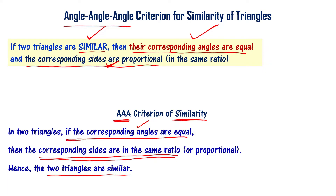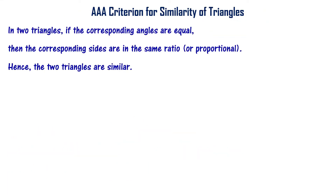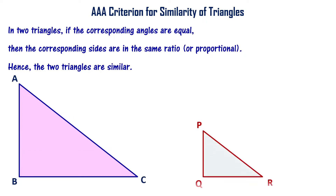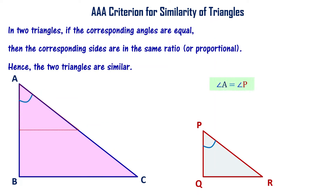So by the Triple-A criterion of similarity of triangles, if corresponding angles are equal then automatically the corresponding sides are in the same ratio and the two triangles are similar. Let's quickly take a look at one example. Let us consider Triangle ABC and Triangle PQR — two different triangles. The corresponding angles: angle A is equal to angle P, and another corresponding angle C is equal to angle R.